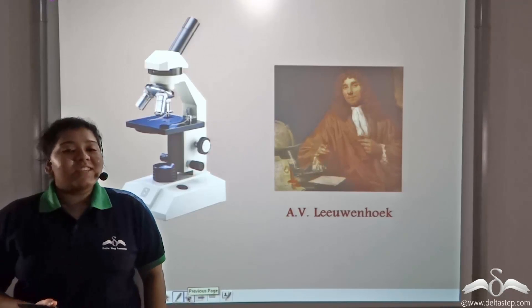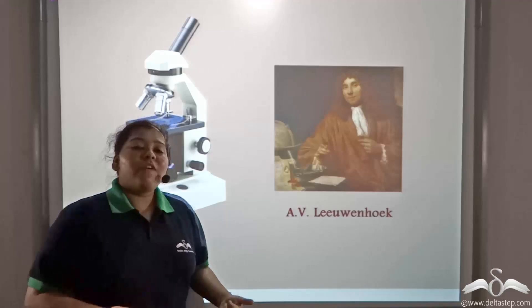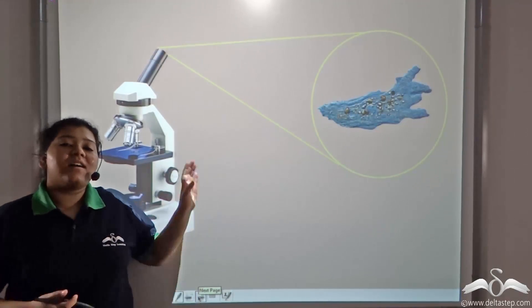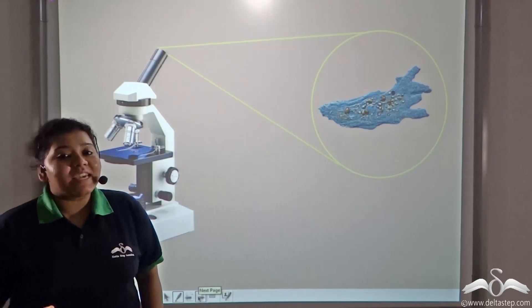With the invention of the microscope, Anton van Leeuwenhoek found a few living organisms that can be seen only under a microscope. They cannot be seen through naked eyes.